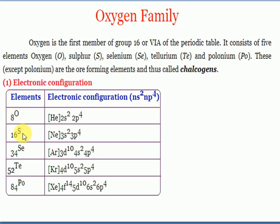Oxygen and sulfur are non-metals; selenium and tellurium are metalloids; polonium is a metal. Metalloid means an element which has properties of both non-metals and metals. One important point: oxygen is the most abundant element in the earth's crust - roughly 48 percent.